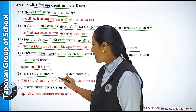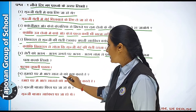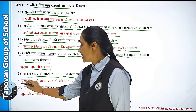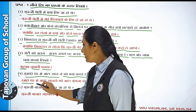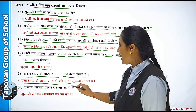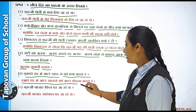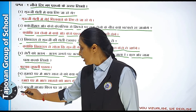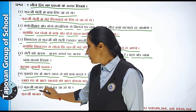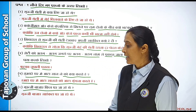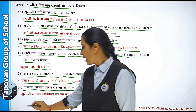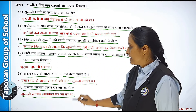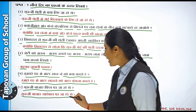Paanchva hai: Tumhare ghar mein aata saanne ko kya kehte ho? Answer hai: Hamaare ghar mein aata saanne ke liye 'aata gundna' kehte hain. Chhatha hai: Guruji bazar kis par gaye hain? Answer hai: Guruji bazar saikal par gaye hain.